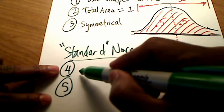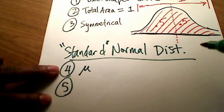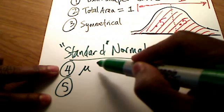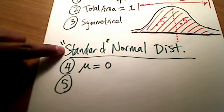Number one is that the mean, and that Greek letter is mu, which stands for population mean or population average, same thing, that the mean is going to be 0. That's what standard means, it means that the population mean is 0.